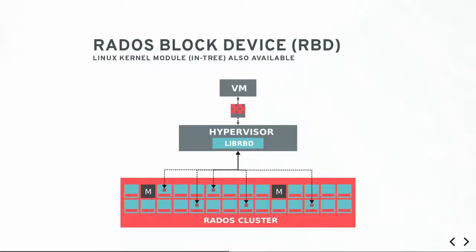You can also use this as a block device. There's no need for an extra server because object names are just the concatenation of the device name and the offset from zero - each client can easily calculate the location of any object. We demonstrate a VM-type service where the hypervisor uses a Rados block device as a backing store. We also have a kernel module, so you can just load the kernel module, mount up your block device in the kernel, and put a file system on it or whatever you want to do.